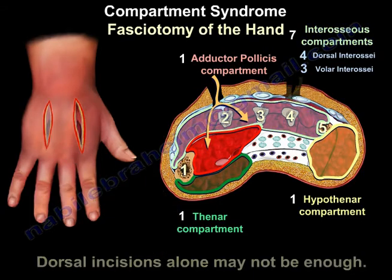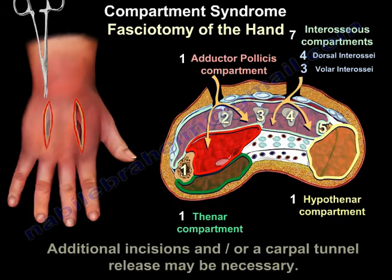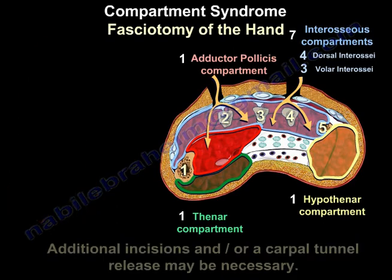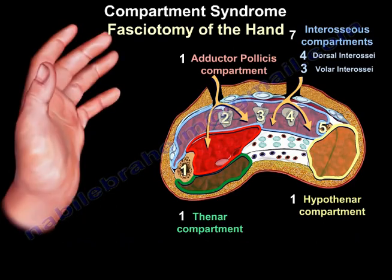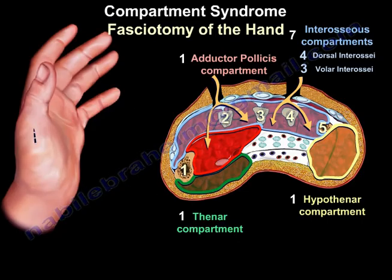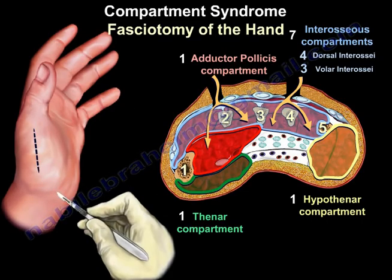Additional incisions and/or a carpal tunnel release may be necessary. An incision may be necessary to release the thenar compartment. The incision is made along the radial aspect of the first metacarpal in order to release the thenar compartment.